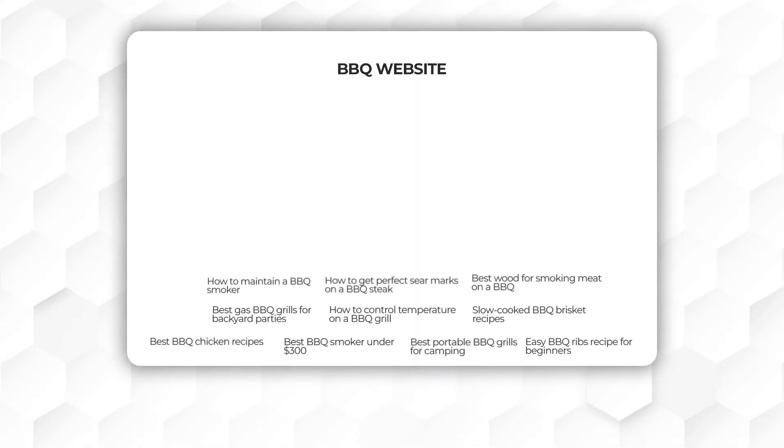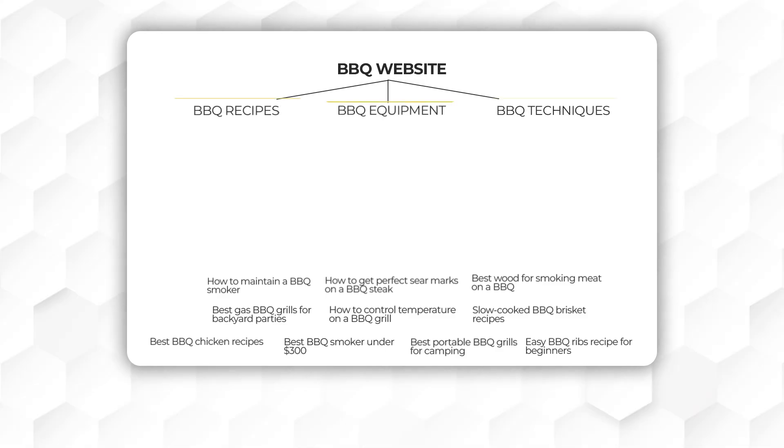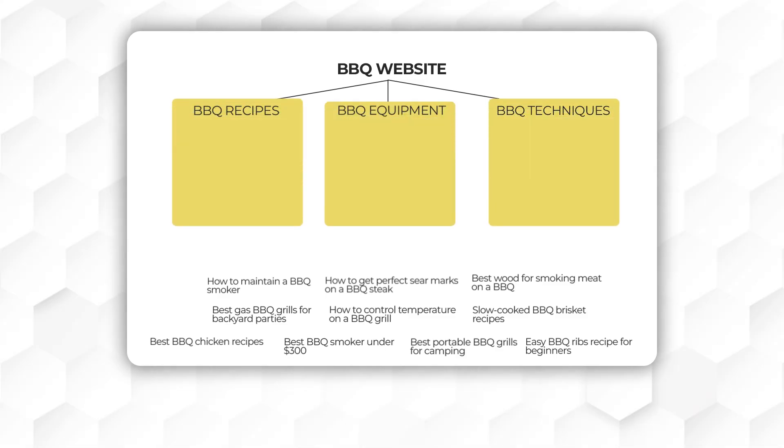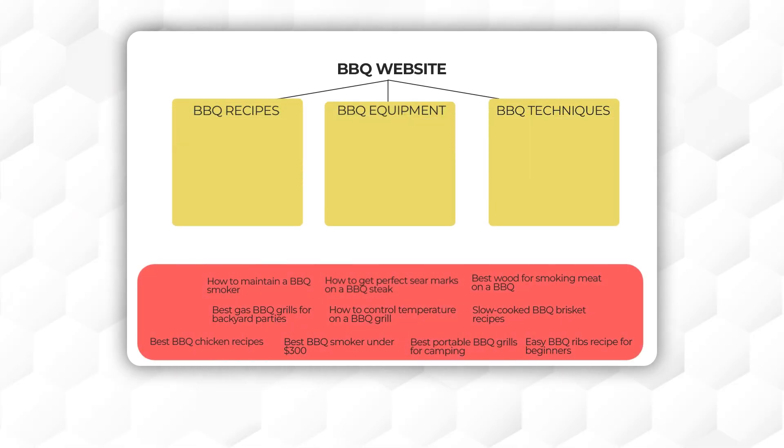They are two different things, so we have to address this before moving forward. For a new site to have a good site structure, we always recommend starting with the silo structure. For example, if we have this list of keywords and plan to organize our blog into categories, a silo structure helps ensure strong topical relevance by grouping keywords into these categories.